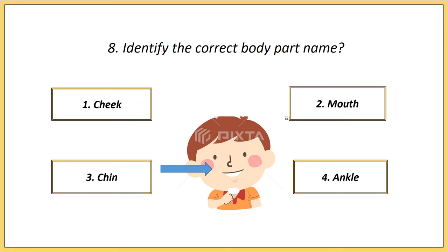Eighth one. Identify the correct body part name. Options: cheek, mouth, chin, ankle. Answer is cheek.